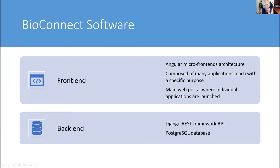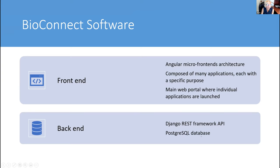The software itself: we have an Angular-based front end, we're using a micro front-ends architecture, which means we're supporting a plugin framework — a number of small standalone applications with a portal that hosts the individual applications. Our back end is a Postgres database, and we use the Django REST framework for our API. We will probably end up with Elasticsearch as well as part of our architecture when we start acquiring massive amounts of data and need to support really fast searches.